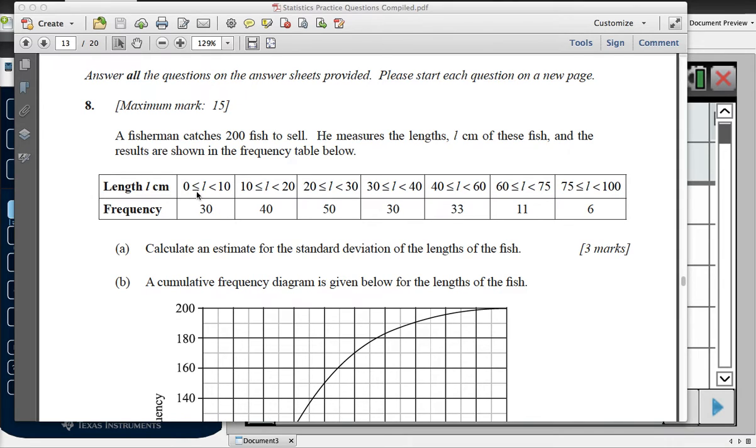In this case we're going to be doing an estimation of the mean because we can see that each of our lengths, each of our data in this particular question is in bounds, so we have to estimate that all of these bits of data, all 30 pieces of this data, are at the 5 centimeter length, halfway in between.